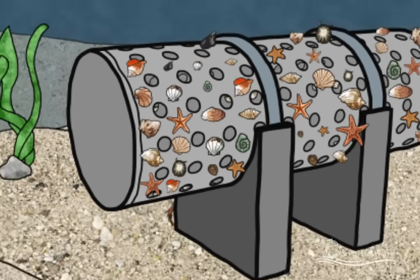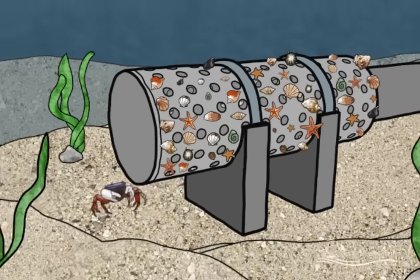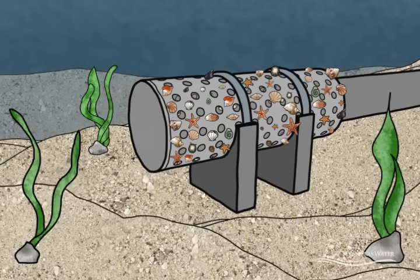In a properly designed brine outfall, no noticeable increase in salinity can be detected at a distance of a few meters from the discharge.